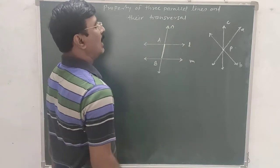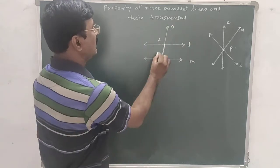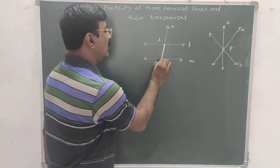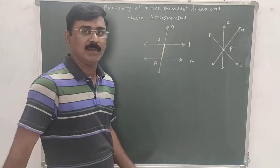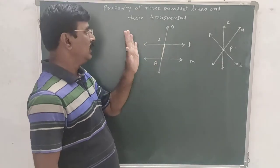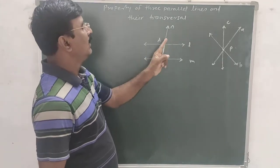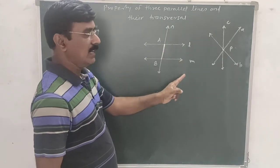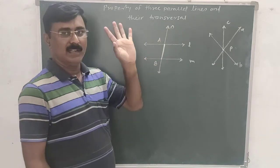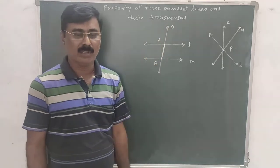In this figure, line N is a transversal. Lines L and M are two parallel lines, and segment AB is called the intercept. So to summarize: parallel lines, transversal, and intercept.